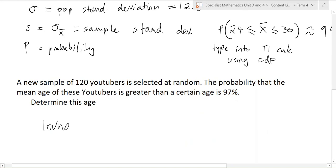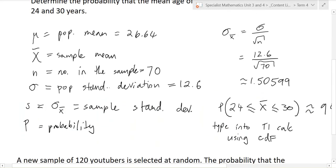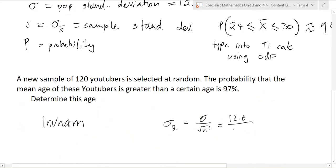So this is where we use this thing called inverse norm. We will need to find the sample standard deviation again. Because we've got a new sample. So the last one is still 12.6. This time we've got 120 YouTubers.